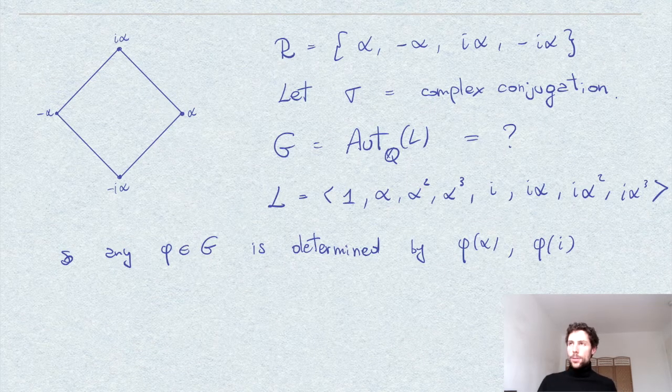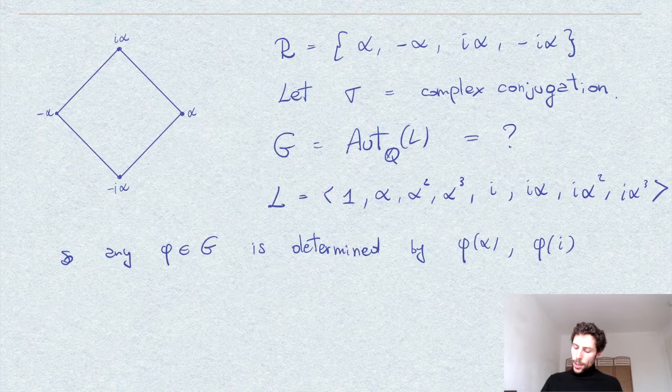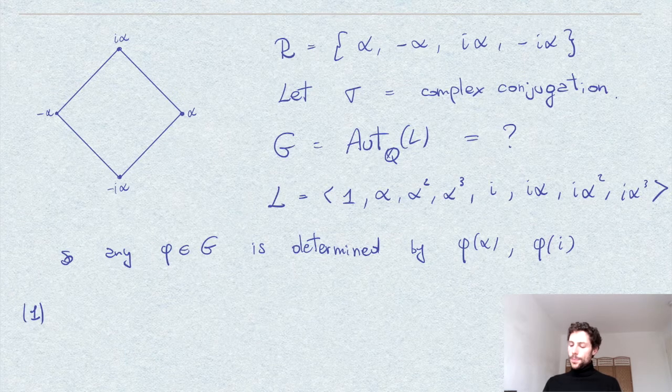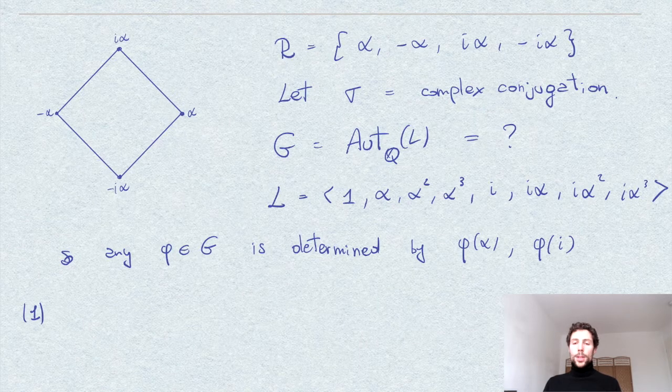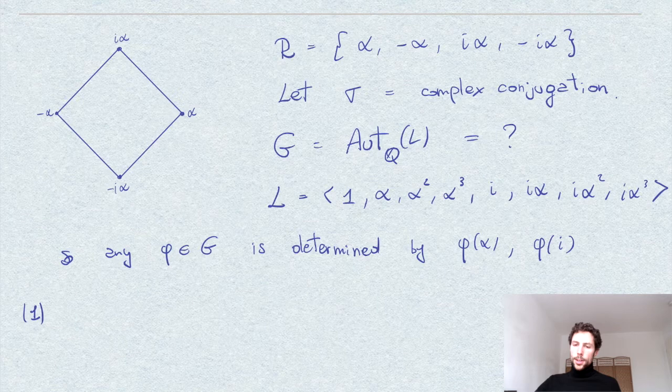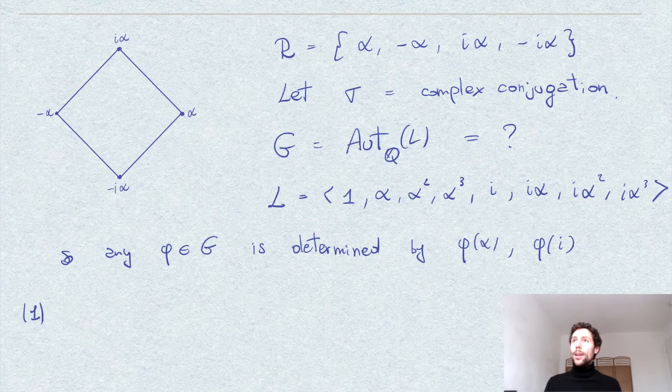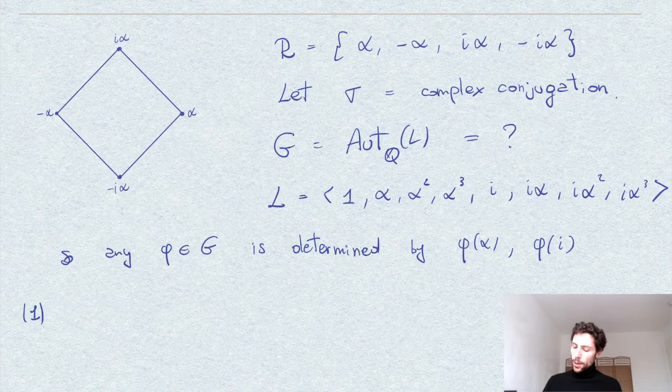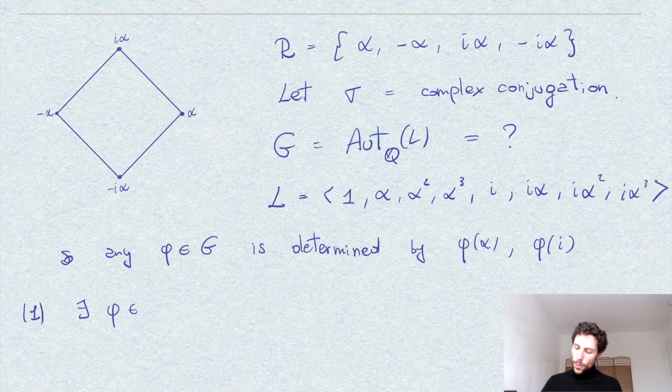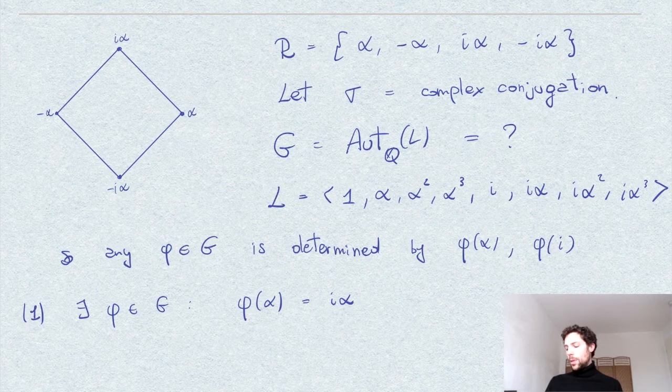So where do we start with f in order to find elements in G? Well, one way is to observe, say, first observation is that the action of G on the roots of f has to be a transitive action because the polynomial f, it is easy to check that it is irreducible. So this means that given two elements, two roots of f, we can find some element. We know the existence of some element in G which sends one into the other. So we can state the existence of an automorphism, say, phi in G, which sends, say, alpha to i alpha. And this is our starting point.